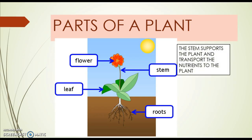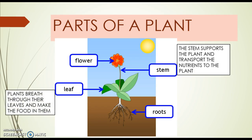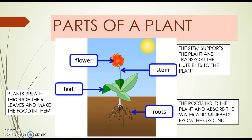The stem supports the plant and transports the nutrients to the plant. The plants breathe through their leaves and make the food in them. The roots hold the plant and absorb the water and minerals from the ground.